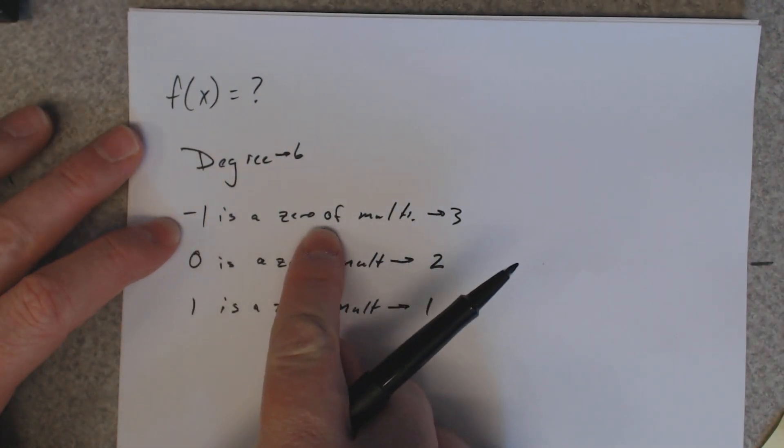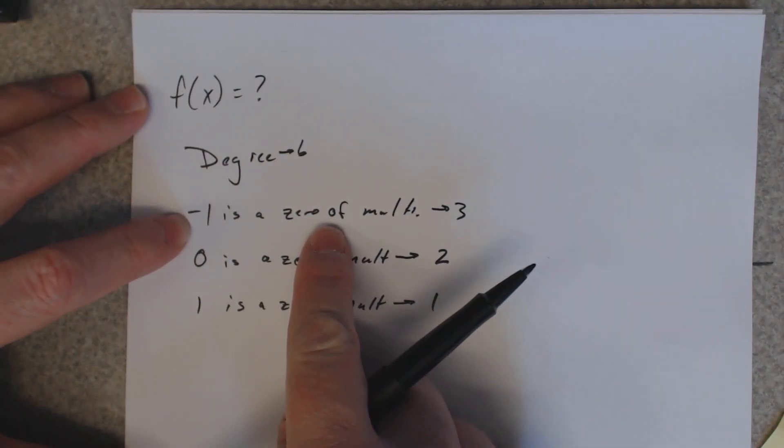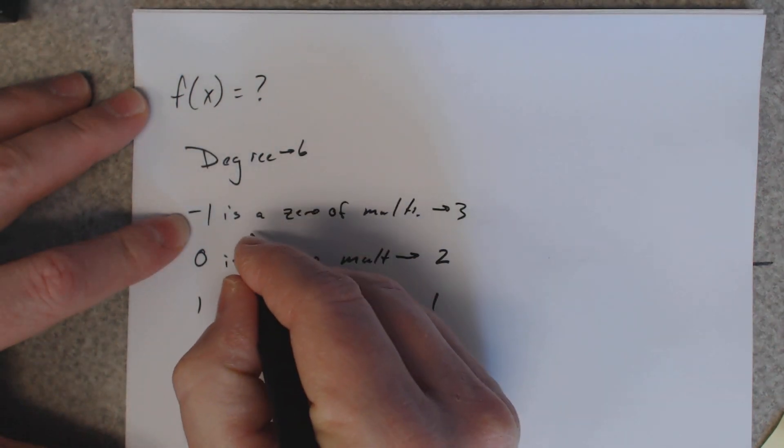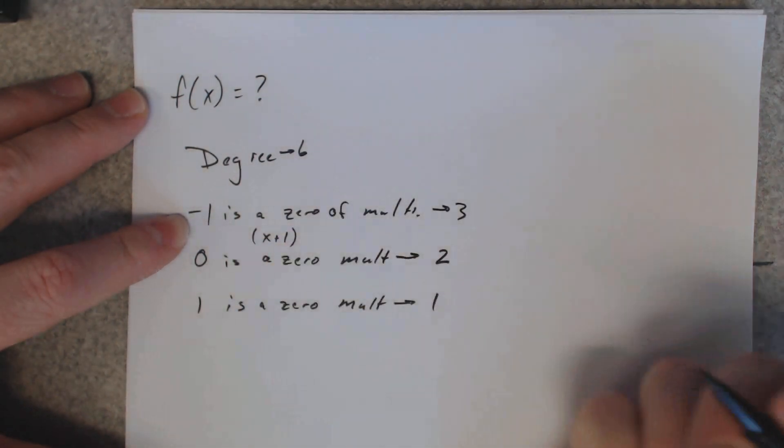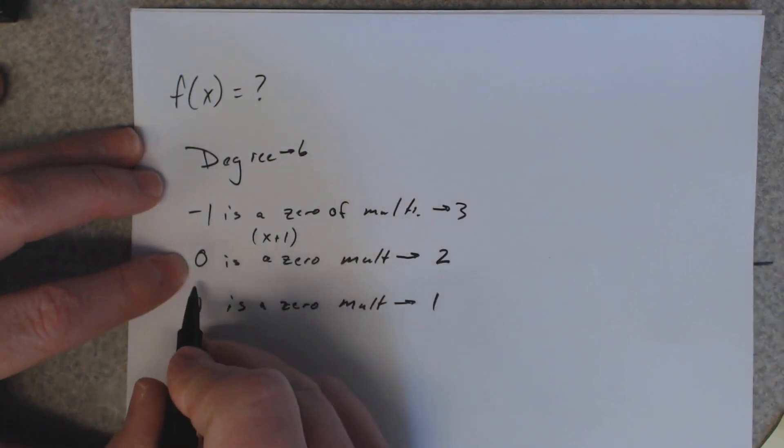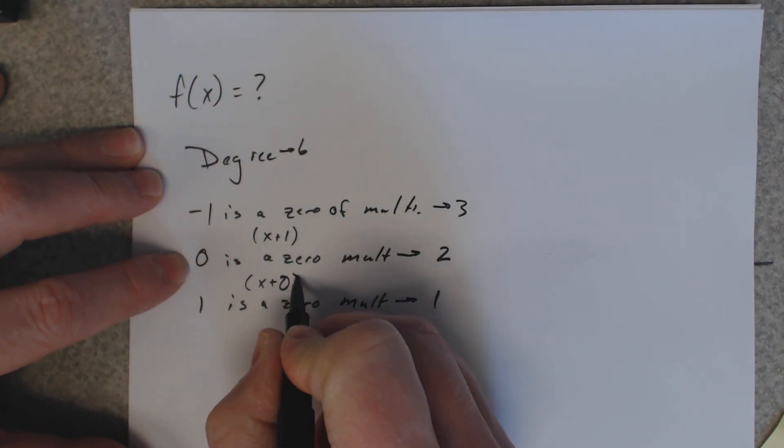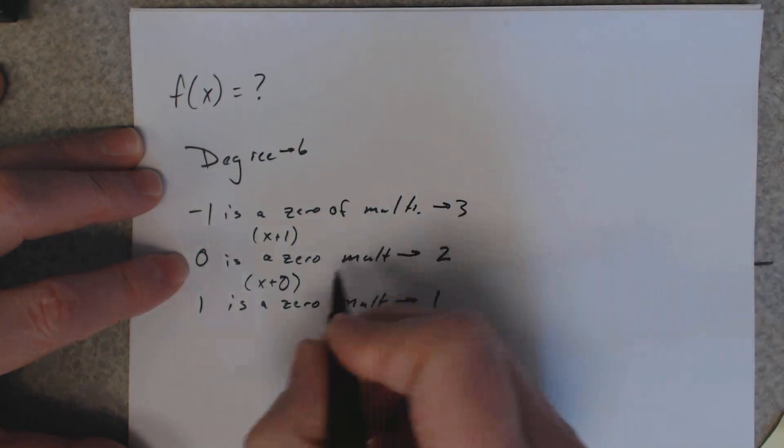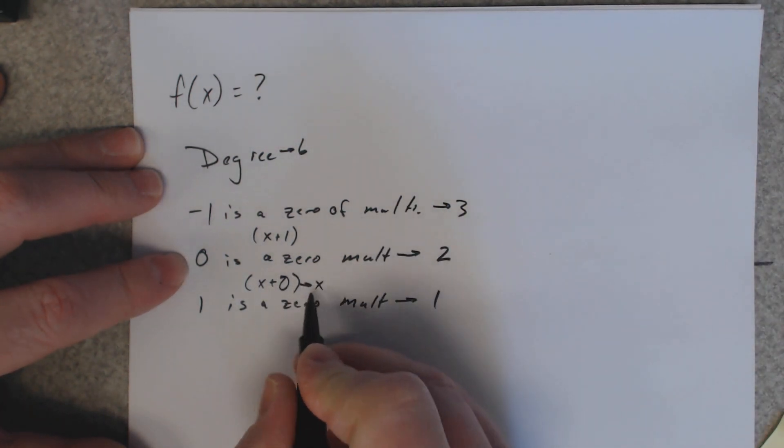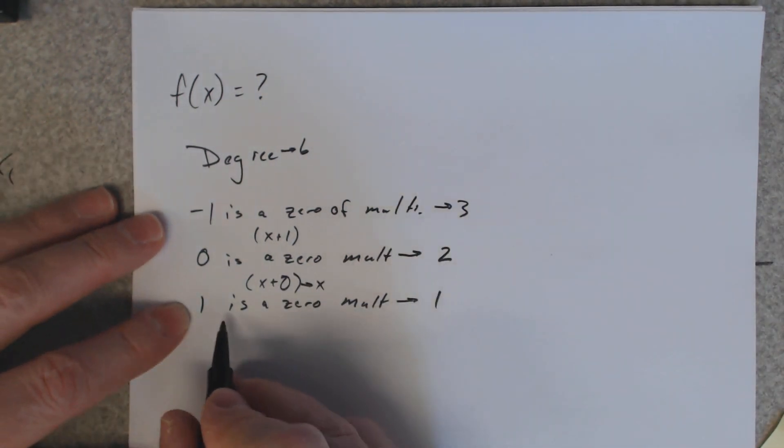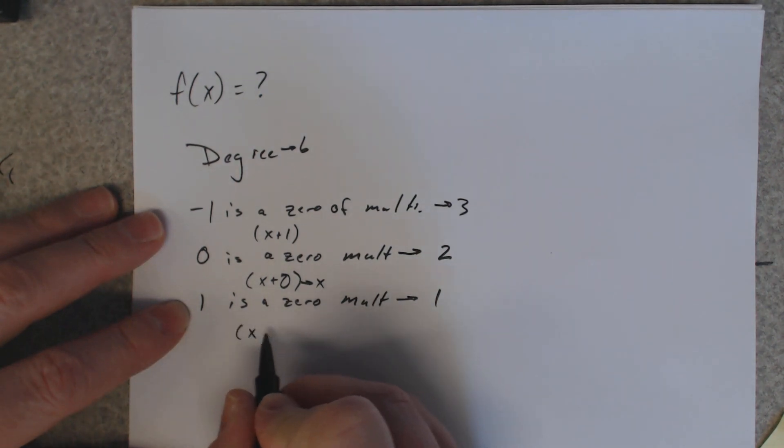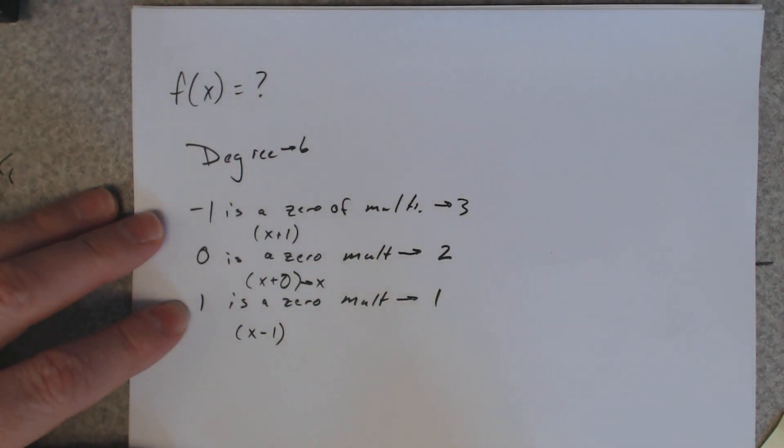So let's go back to this. If negative 1 is a zero, what factor would that represent? x plus 1. 0 is a zero, what would that represent? That's kind of weird. x plus 0, but you don't say x plus 0 or x minus, you just say x. So x is a factor. 1 is a zero, that gives you a factor of x minus 1.